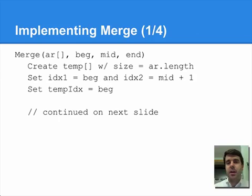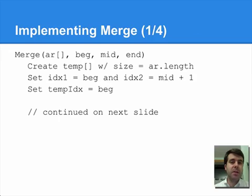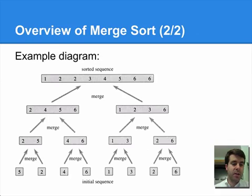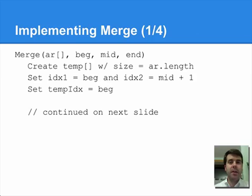Here's how merge works — you're going to see this pseudocode broken up over four separate slides, but they're all part of the same merge function. First, we create a temporary array with the same size as the original so we can reuse the same indexes. Then we create two temporary index variables, each pointing at the beginning of the two pieces we're merging: index 1 starts at begin, index 2 starts at mid plus 1. We also need a third variable to track where we copy things into the temporary array.